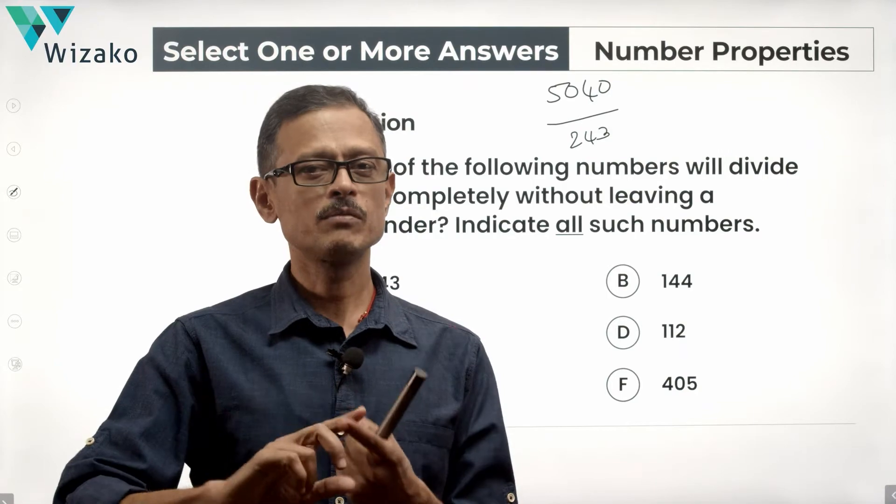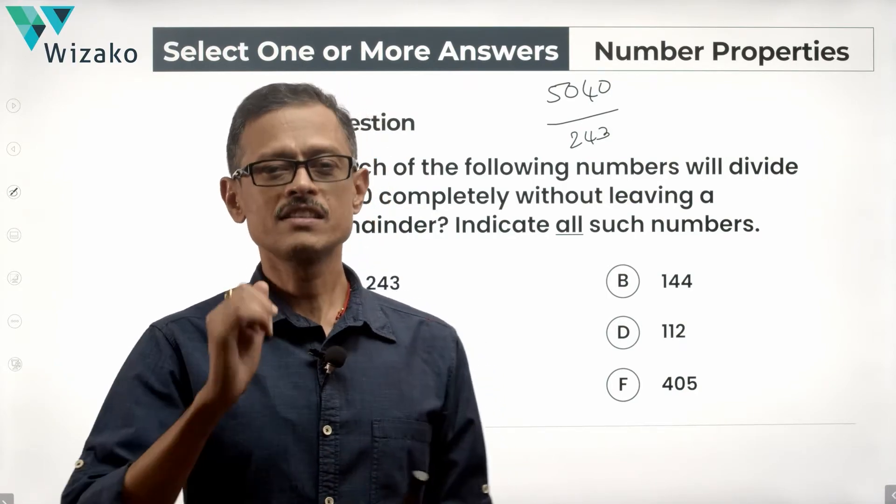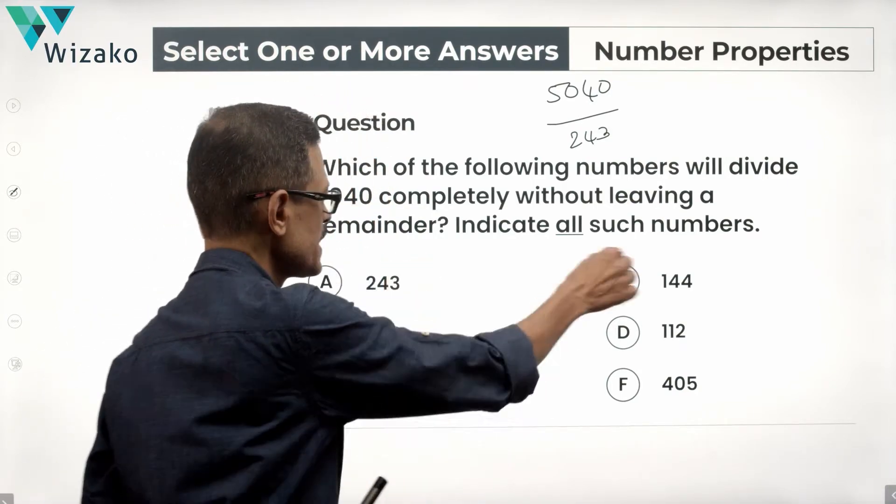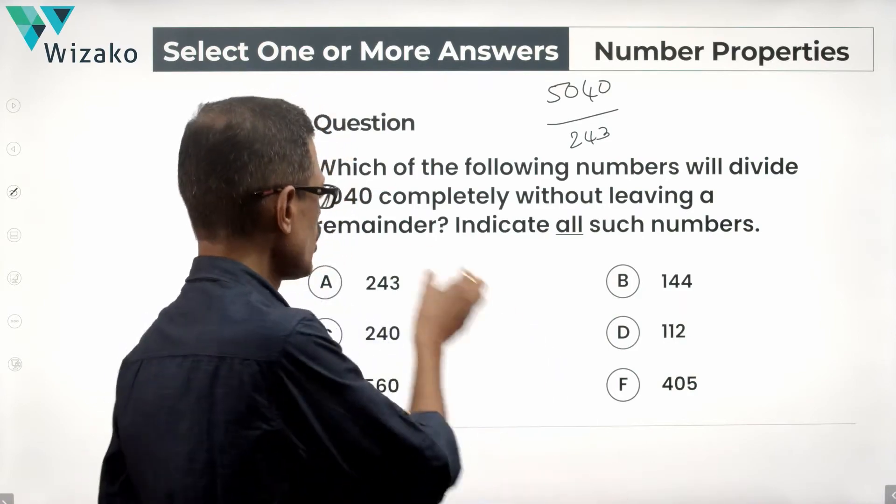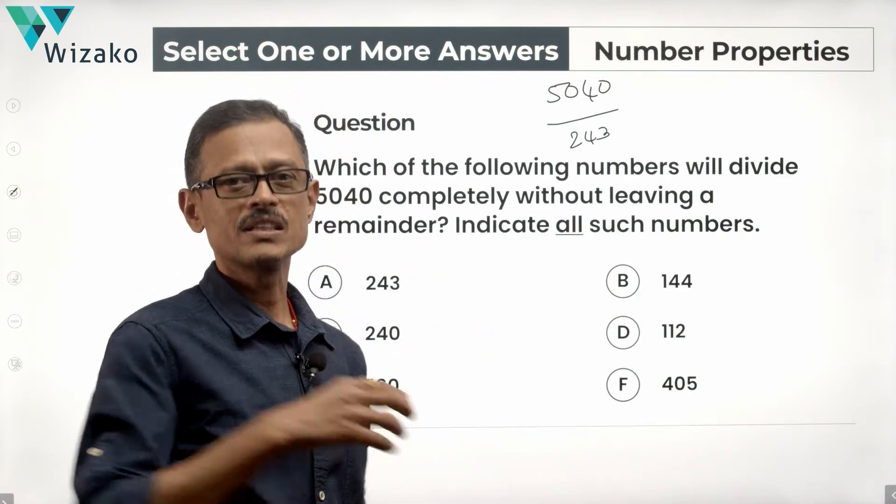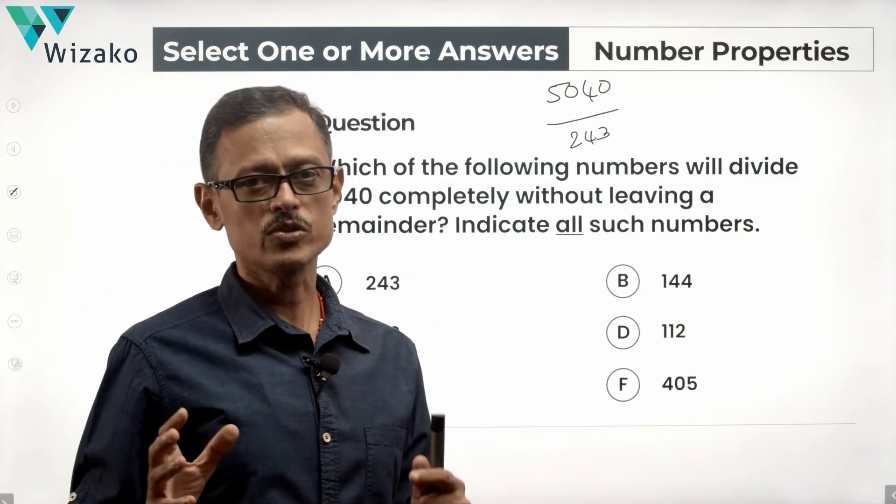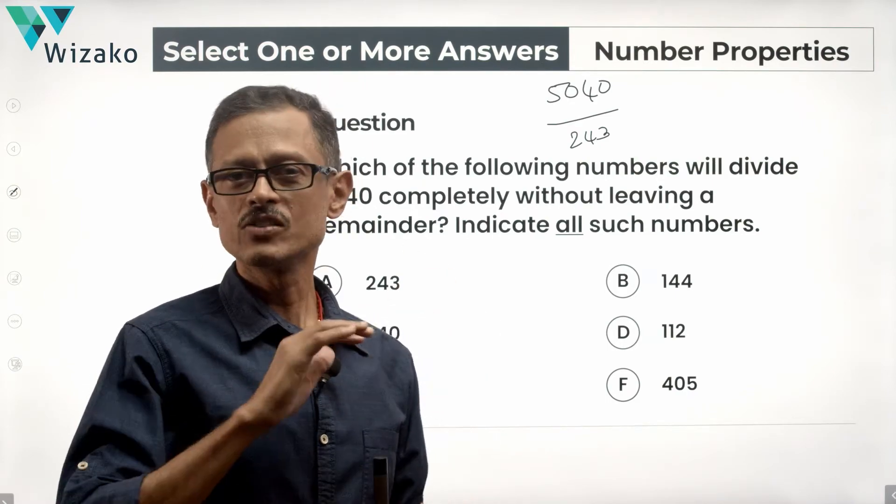So our process is step one, prime factorize 5040. Step two, prime factorize each of these numbers and check out whether all the prime factors contained in these numbers are found in 5040 in adequate quantity. That's the process we're going to take.